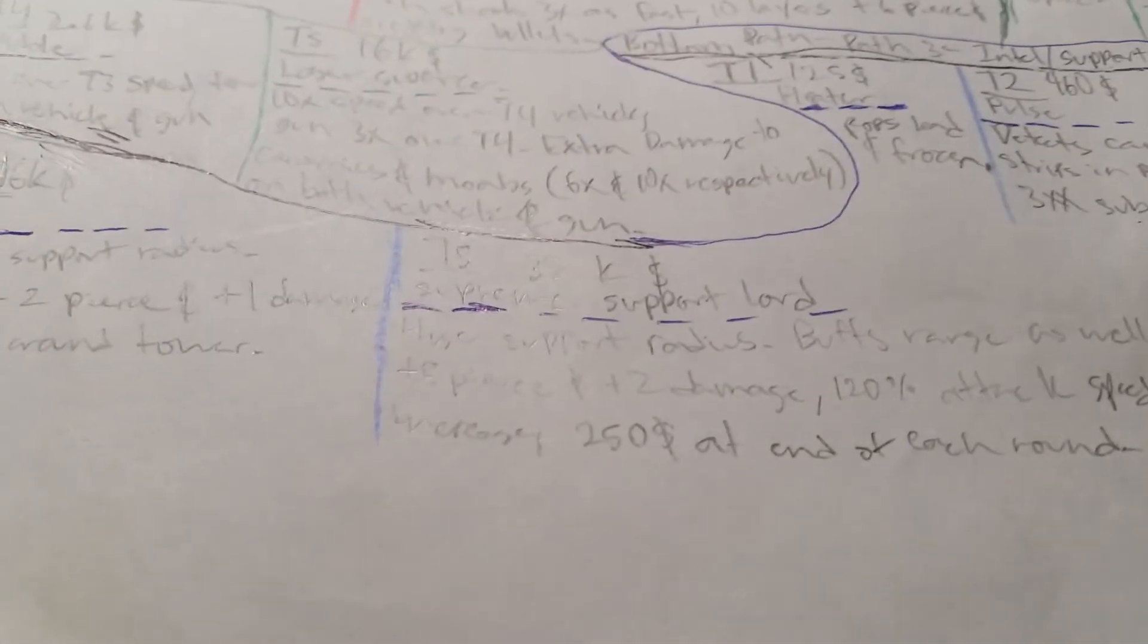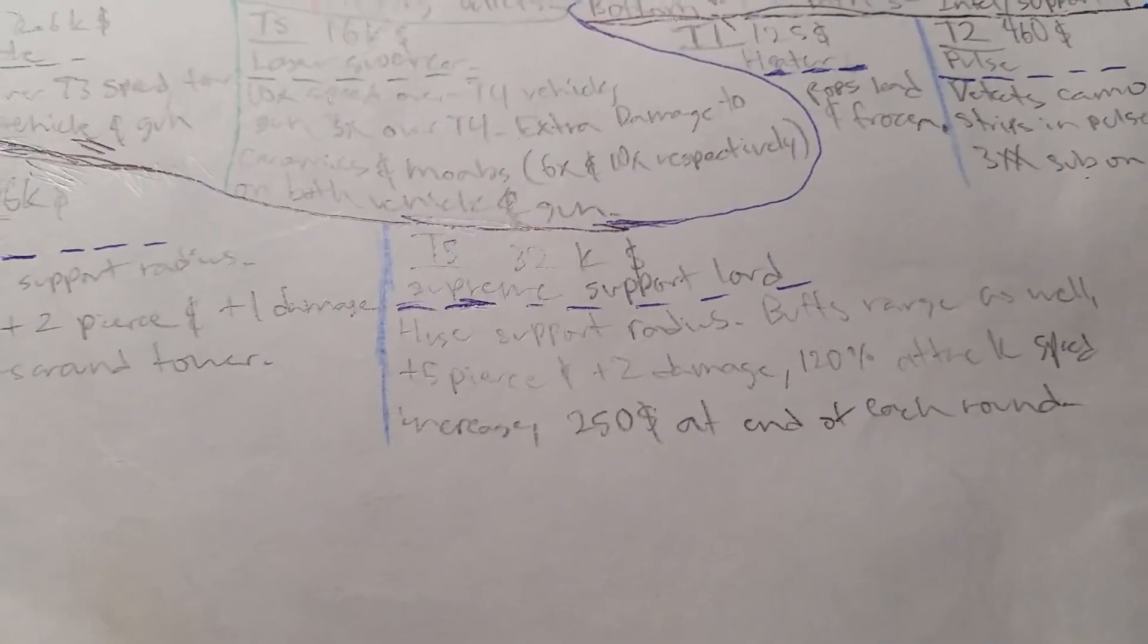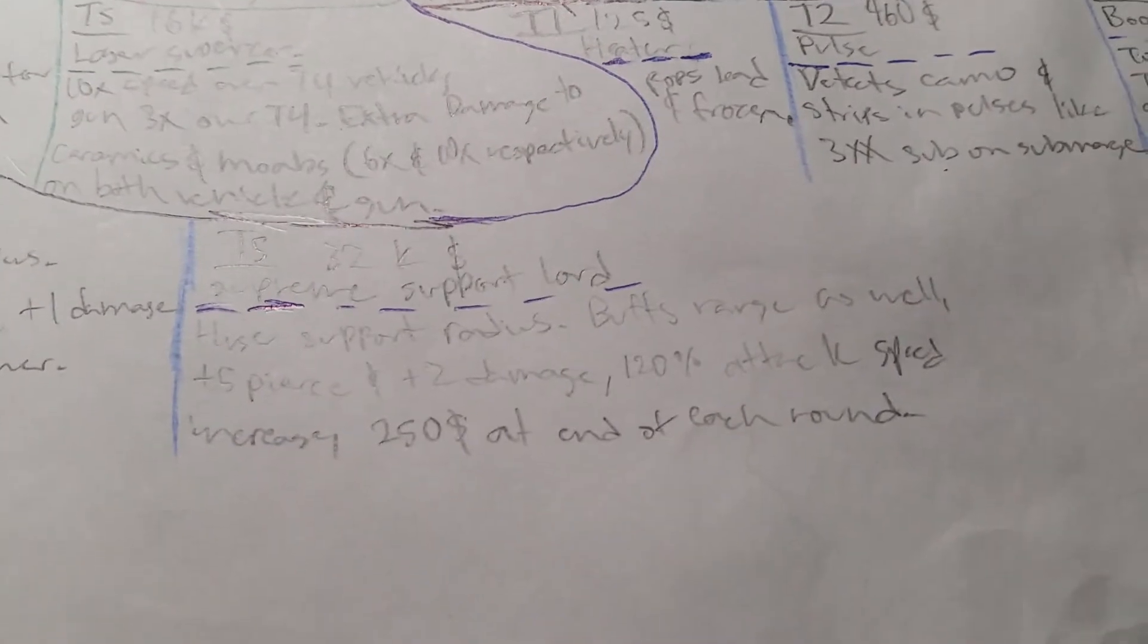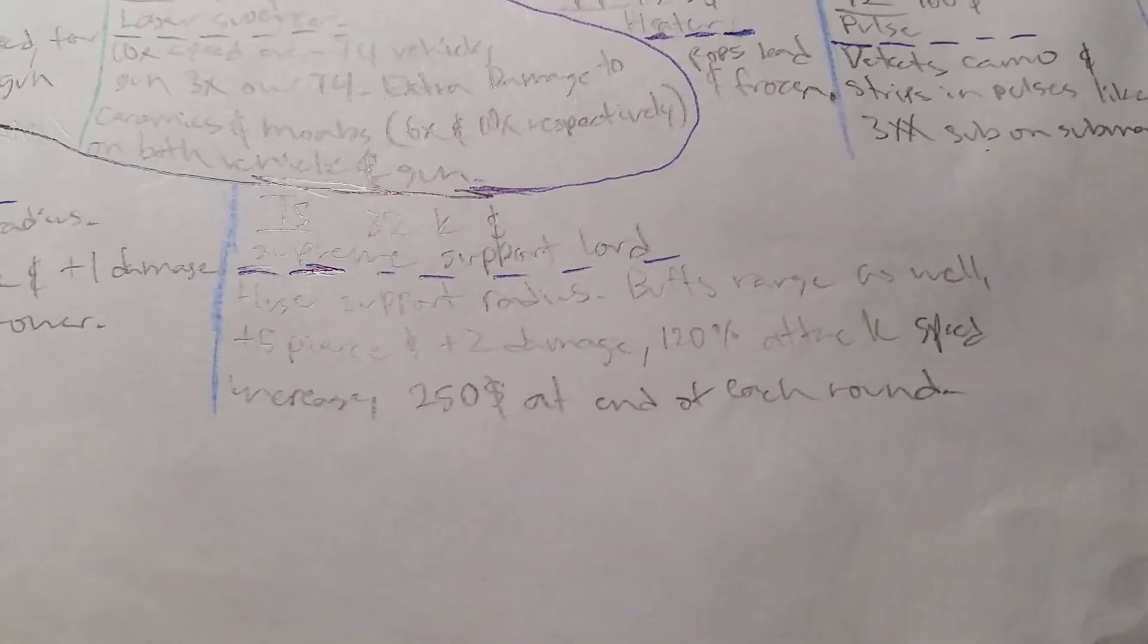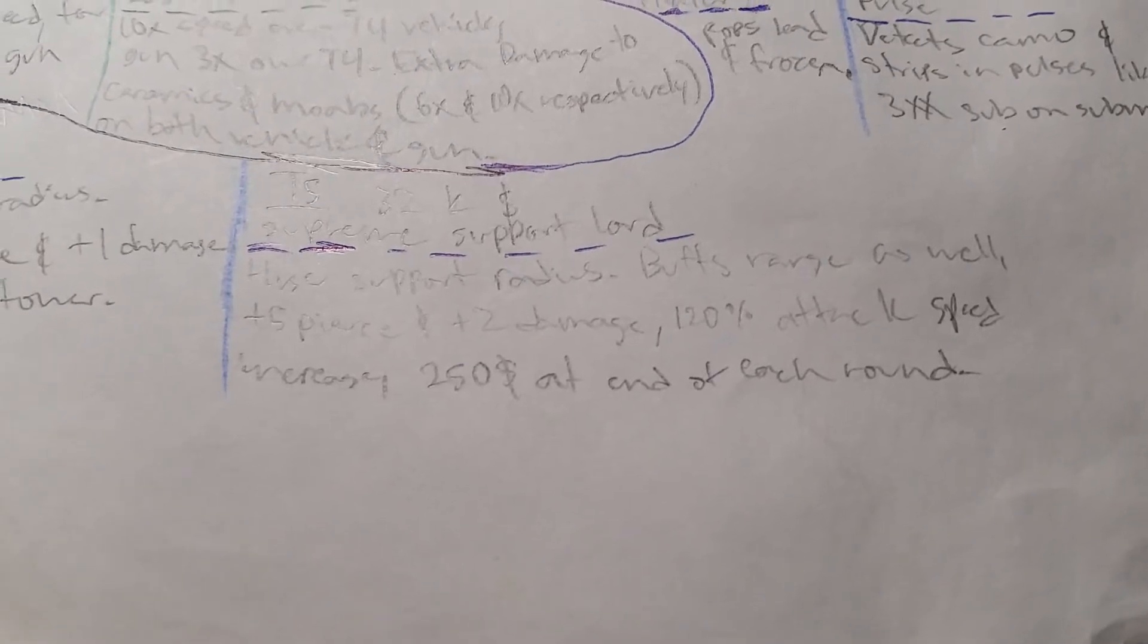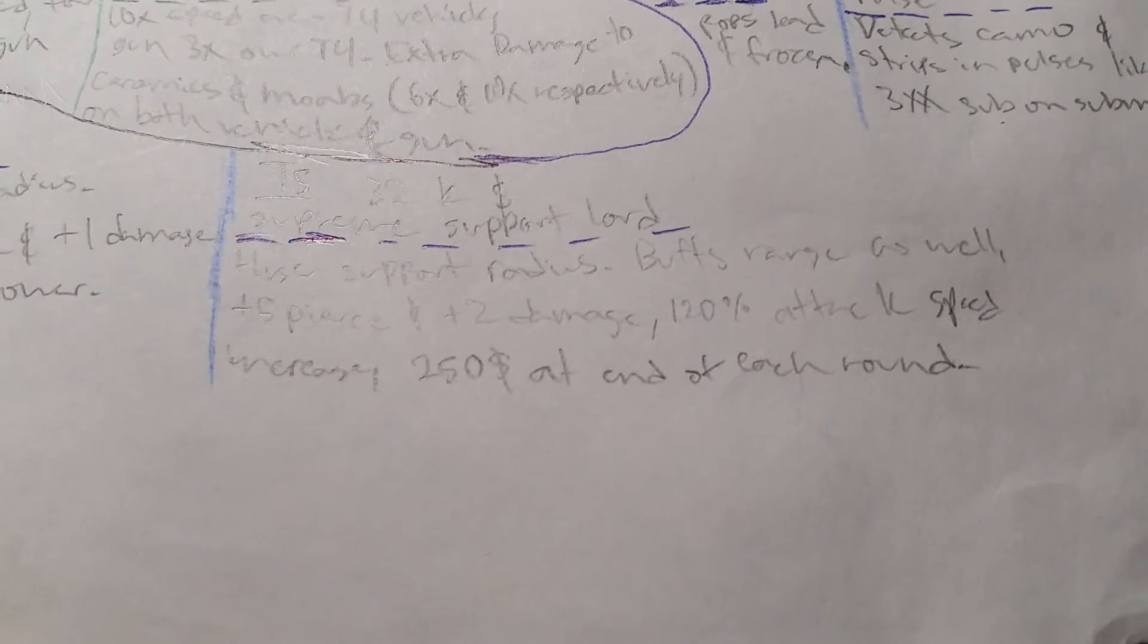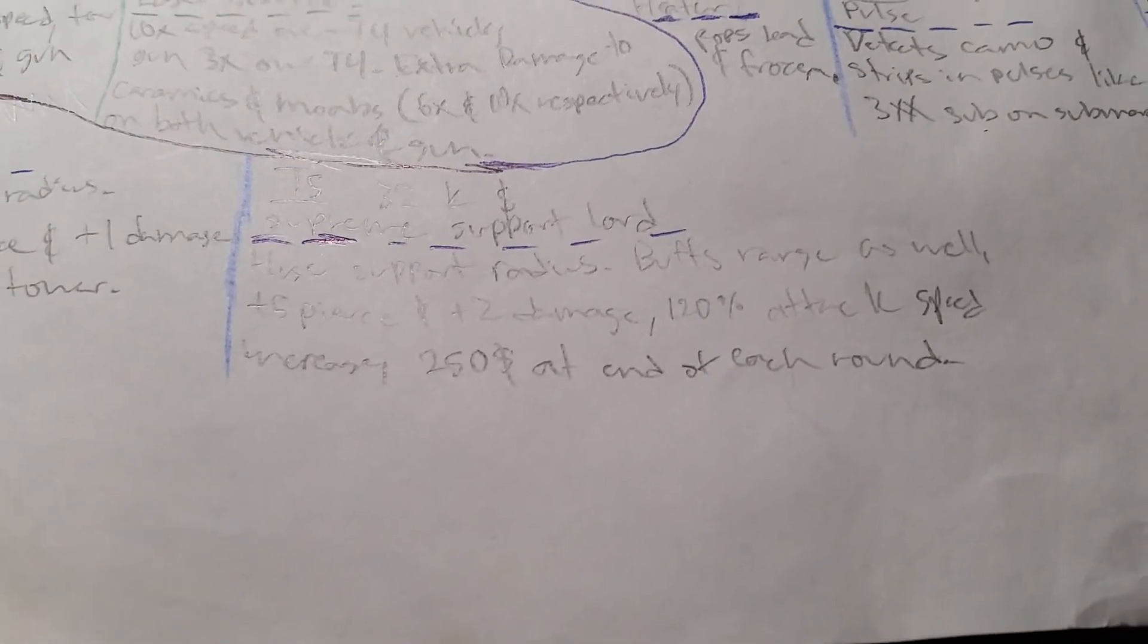Tier 5, 32K, supreme support, huge support radius, boost range as well, plus 5 pierce and plus 2 damage, 120 percent attack speed increase, and 250 dollars at the end of each round.